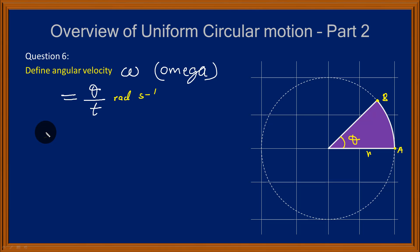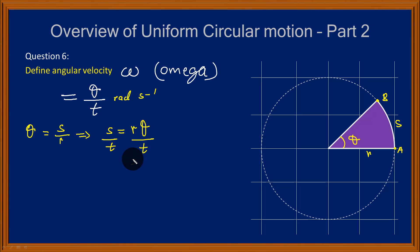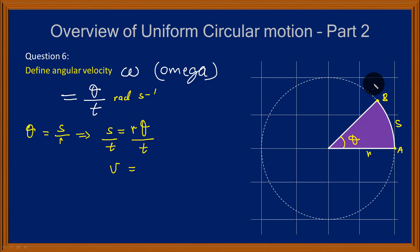Let's go back to the definition of angle. The arc length AB is S, and we defined theta as S over R. This implies that S equals R times theta, after multiplying both sides by R. Suppose we divide both sides by T — we get distance divided by time, which is the linear speed of this particle along the circumference of the circle.